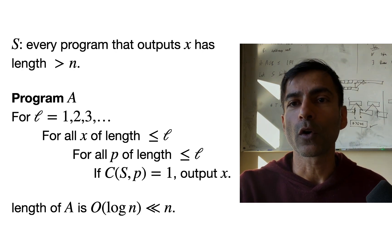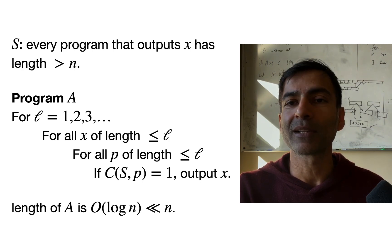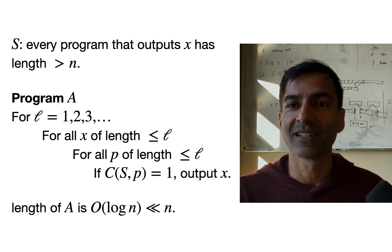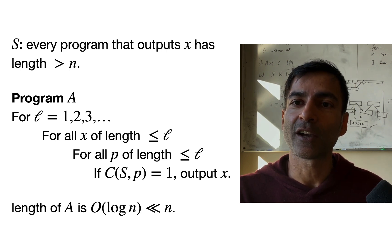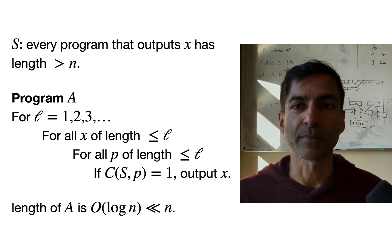That's because the code of this program—the only place where n shows up in the code of this program is in the statement S. And in S, you just have to write down the value of n in binary, or you write down the digits of n. And this just takes log n bits.